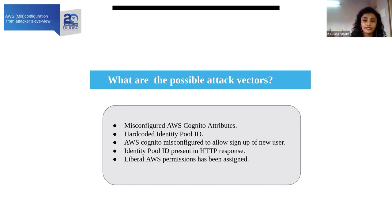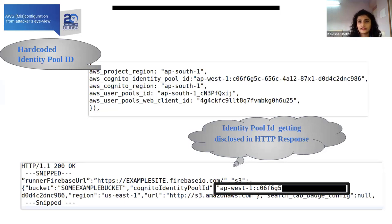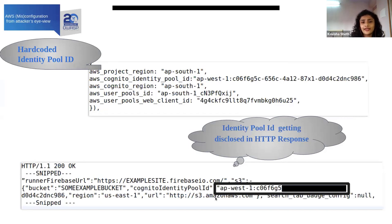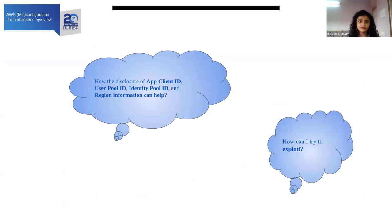Now I discussed that hardcoded pool ID is being stored, or the identity pool is getting disclosed in the HTTP response. This is one example where you are getting a hardcoded pool ID in the HTTP response. But you might be thinking this is not confidential information — the identity pool ID or app client ID. So what else can be done?